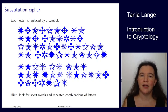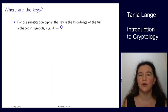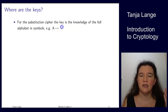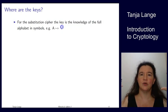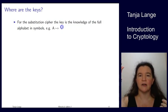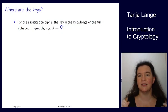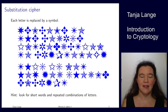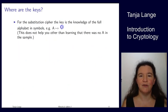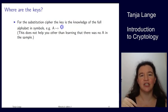In the first lecture I highlighted the importance of keys, so you might wonder where the keys are here. The substitution cipher's key is the knowledge of the full alphabet mapping — for each letter, what symbol it maps to, and vice versa. Here's an example: A corresponds to the star. Well, I just gave an exercise and now I'm giving it away. Flipping back, the only thing you learn is that the text I gave you does not actually contain an A.